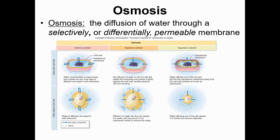Osmosis is the diffusion of water through a selectively permeable membrane — water moves toward the hypertonic solution, which has the higher solute concentration. Like putting salt on a slug: the salt is hypertonic, so water moves out of the slug toward it. Similarly, when a carrot is put in fresh water, which has zero solute concentration — the ultimate hypotonic solution — water floods into the carrot because it's hypertonic compared to the 0% solution outside.